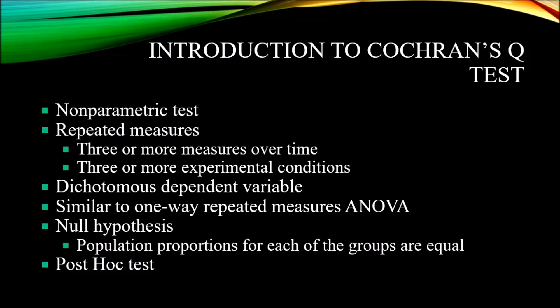We can think of the Cochrane's Q-Test as similar to a one-way repeated measures ANOVA, except you only have the dichotomous level of measurement for the dependent variable. We can also think of this statistic as similar to a Friedman's ANOVA, which is a non-parametric alternative to a one-way repeated measures ANOVA.